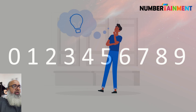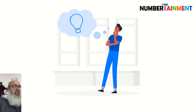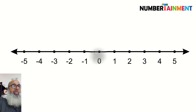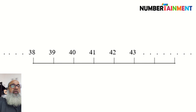A good way to imagine numbers is to imagine them on a straight line, like this. It's called the number line, and we can pick out a section of the line anywhere we like, like this. This makes it easier to work with numbers.